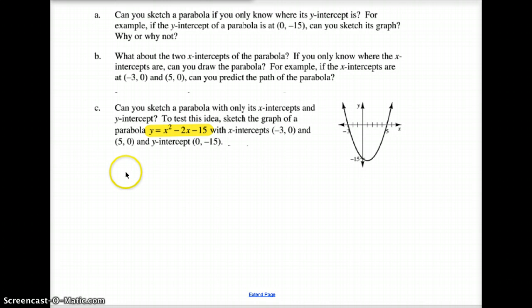If I factor that one out, I need two factors of negative 15 that add up to negative 2. So hopefully you understand that this becomes y equals, the factors of this would be x minus 5 and x plus 3. These two factors right here become this.